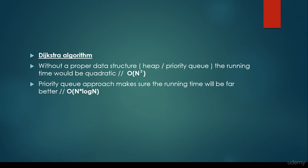The priority queue approach makes sure that the running time will be far better, O(n log n). And if we have a huge data set, so n is equal to a great number, then of course it's going to be very important to use an n log n algorithm instead of n squared.